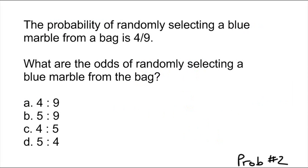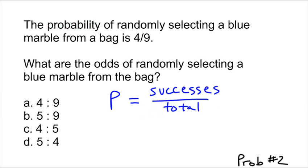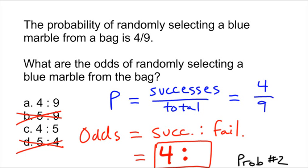Problem 2: The probability of randomly selecting a blue marble from a bag is 4 out of 9. What are the odds of randomly selecting a blue marble from the bag? The probability of successes out of total gave us 4 out of 9. The odds of successes to failures — the first number is going to be 4, which already rules out B and D. The number of failures would be 5, so the correct answer is C: 4 to 5.